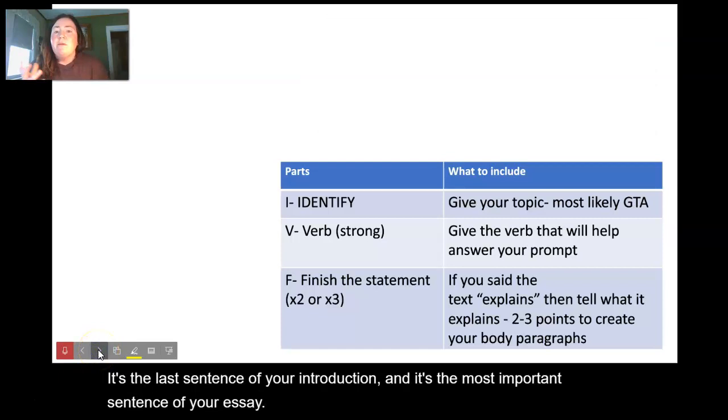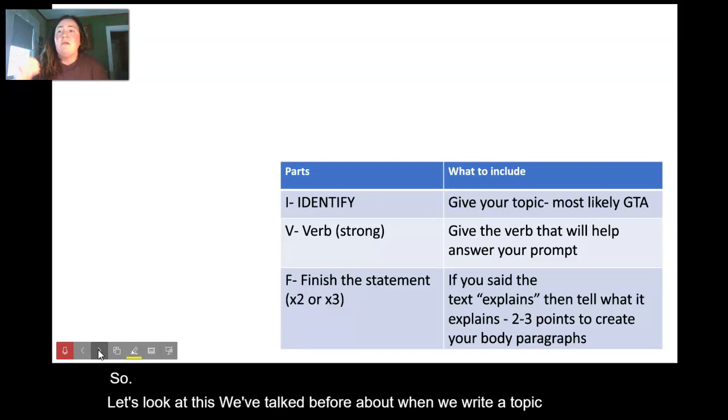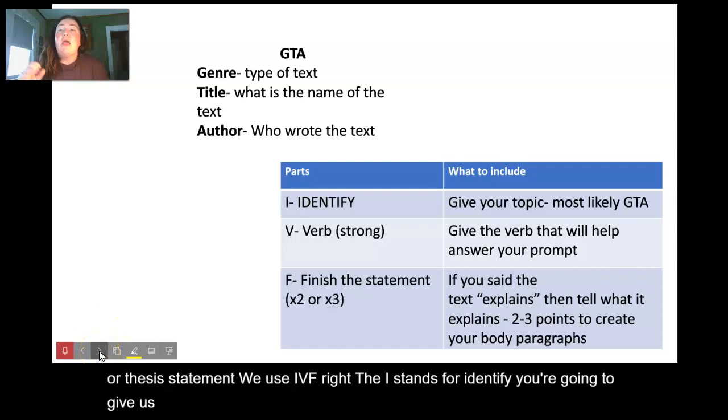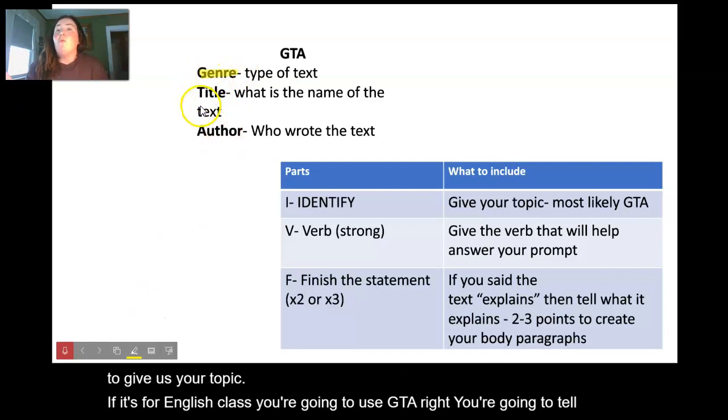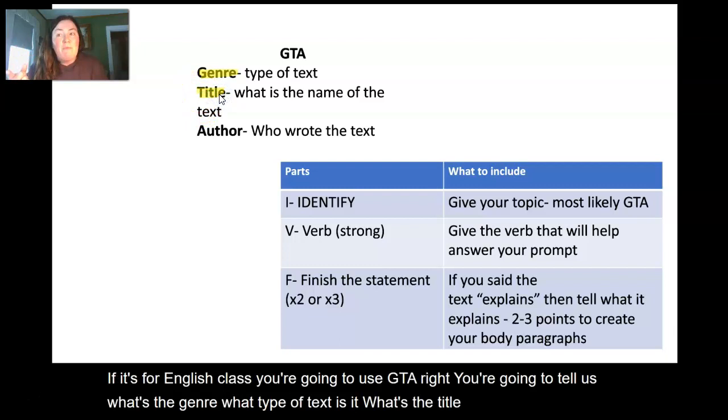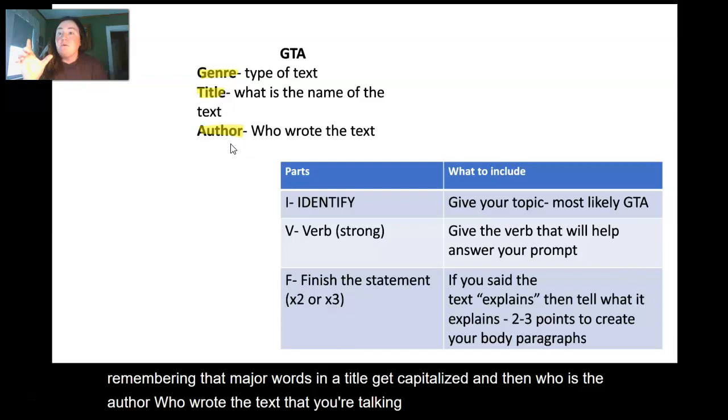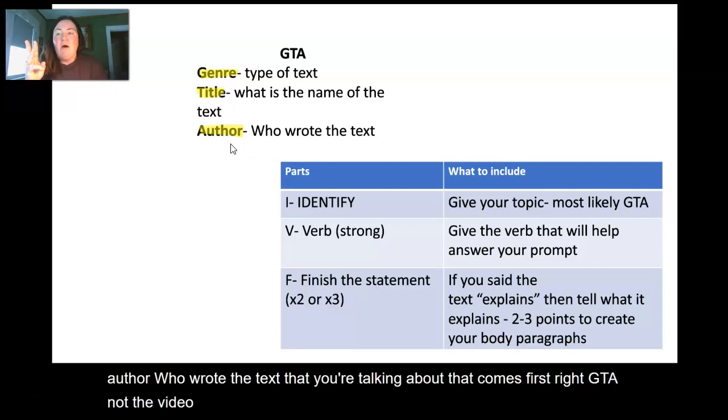So let's look at this. We've talked before about when we write a topic sentence or thesis statement, we use IVF. The I stands for identify - you're going to give us your topic. If it's for English class, you're going to use GTA. You're going to tell us what's the genre, what type of text is it, what's the title - name the text, remembering that major words in a title get capitalized, and then who is the author who wrote the text that you're talking about.